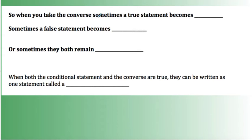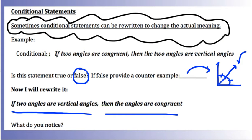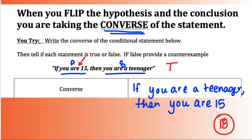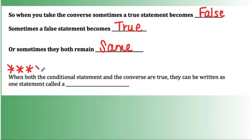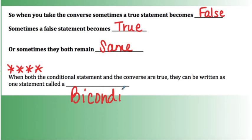When you take the converse, sometimes a true statement becomes false. Or sometimes a false statement — like in that earlier vertical angles example — becomes true. Or they could both remain the same, both true or both false. Here's something important: when both the conditional statement and the converse are true, they can be written as one statement called a bi-conditional statement.